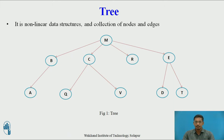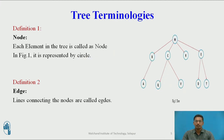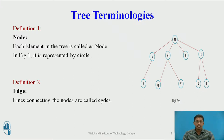A tree is a nonlinear data structure — it is a collection of nodes and edges. The general diagram of a tree looks like this, where circles indicate nodes and arrows indicate edges. Now we will see different definitions related to a tree. Definition one: each element in the tree is called a node. In the diagram, M, B, R, E, etc. are called nodes, represented by a circle.